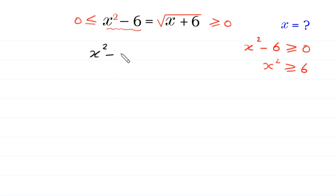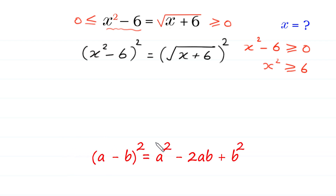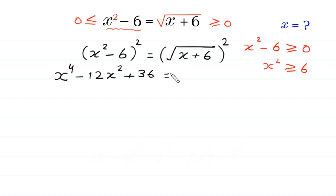At the left side, we have x squared minus 6. We square the left side, and at the right side we have square root of x plus 6, and we square the right side. According to algebraic identity, a minus b whole square equals a squared minus 2ab plus b squared. So x squared minus 6 whole square equals x to the power 4 minus 12x squared plus 36, and the square cancels with the square root, leaving x plus 6 on the right side.